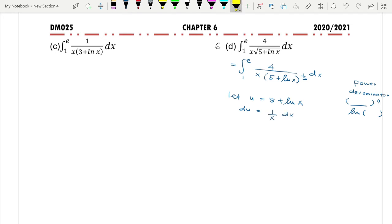Now we have du. Then differentiate: 5 gives 0, differentiate ln x you get 1/x dx. So 1/x dx is basically du. If you want 4/x, times 4 both sides, so you get 4du.